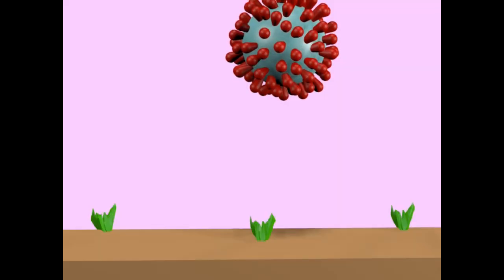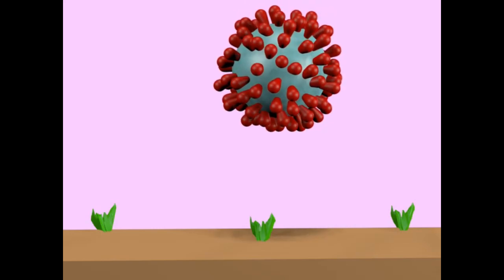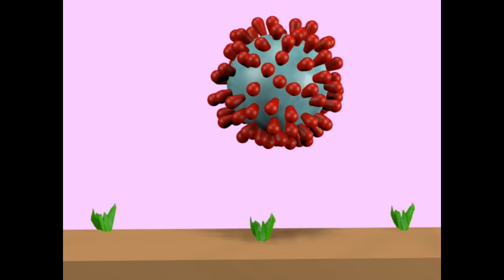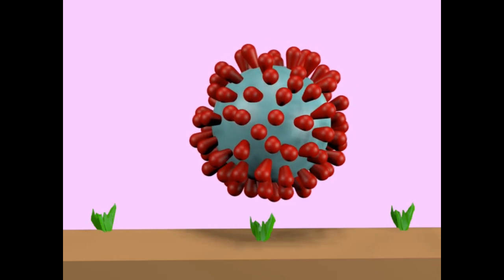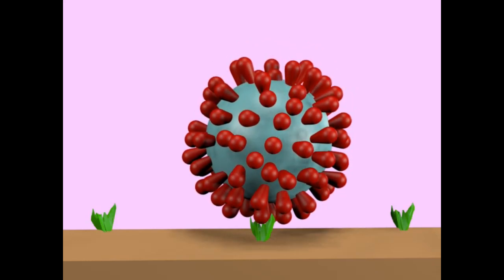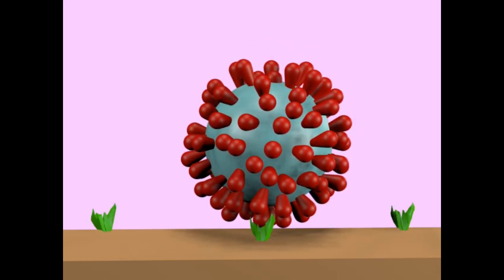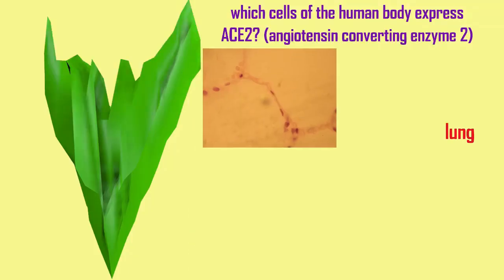The coronavirus is only able to enter human cells if they possess the appropriate receptor. The ACE2 receptor — the angiotensin-converting enzyme 2 — is the receptor for coronaviruses, and a number of human cells express this, allowing coronavirus infection.